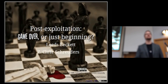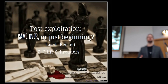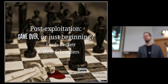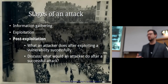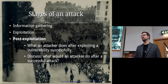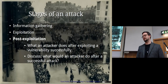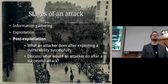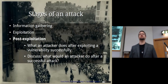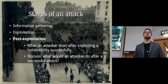Getting into the system is what they needed to do in order to accomplish their goals, and what they do next is what they're actually aiming to do. So we've talked about the steps leading up to this, and now we're talking about what you can do after exploiting a vulnerability. What might be some examples of what an attacker might do after having compromised the system?